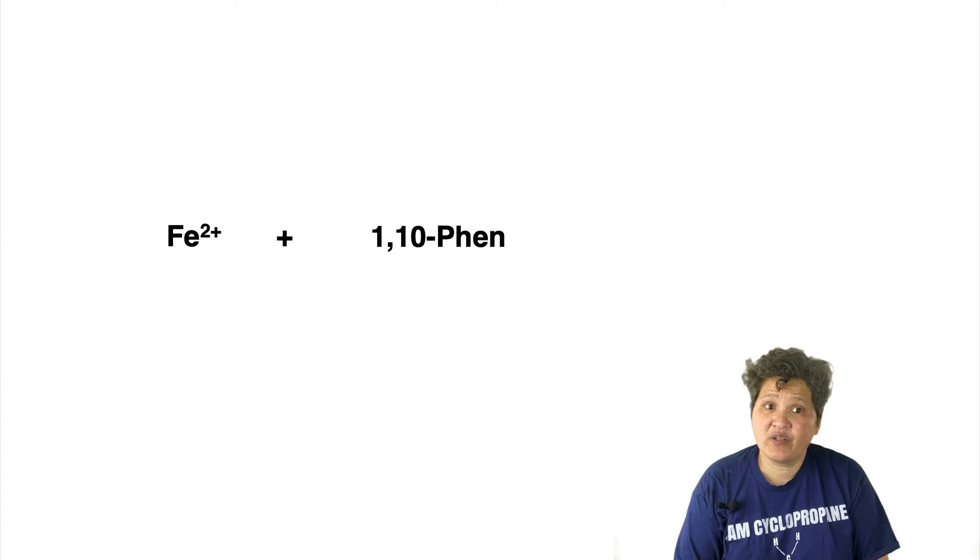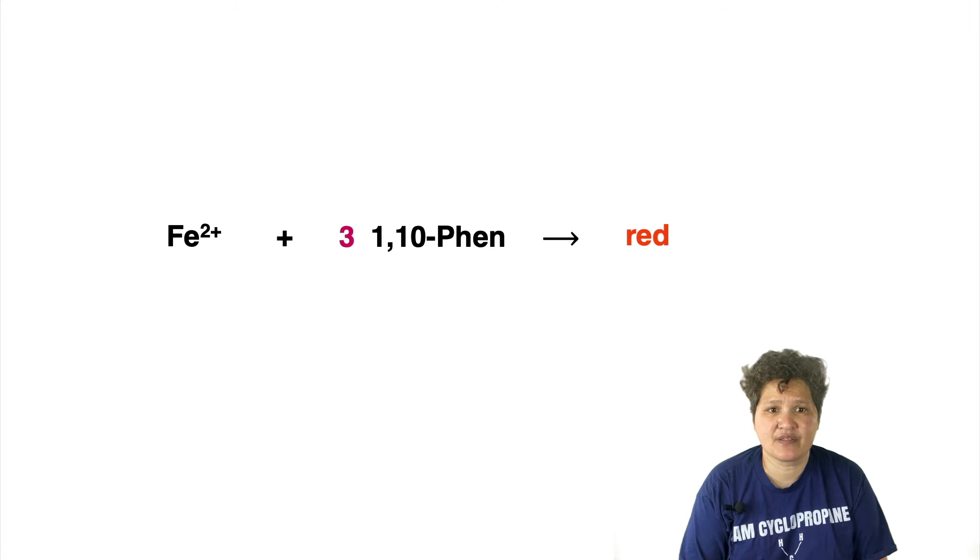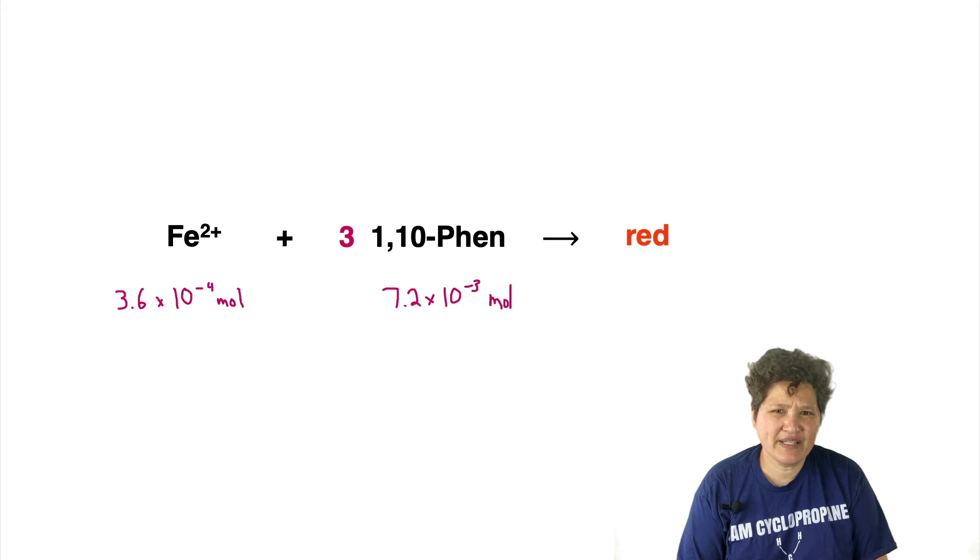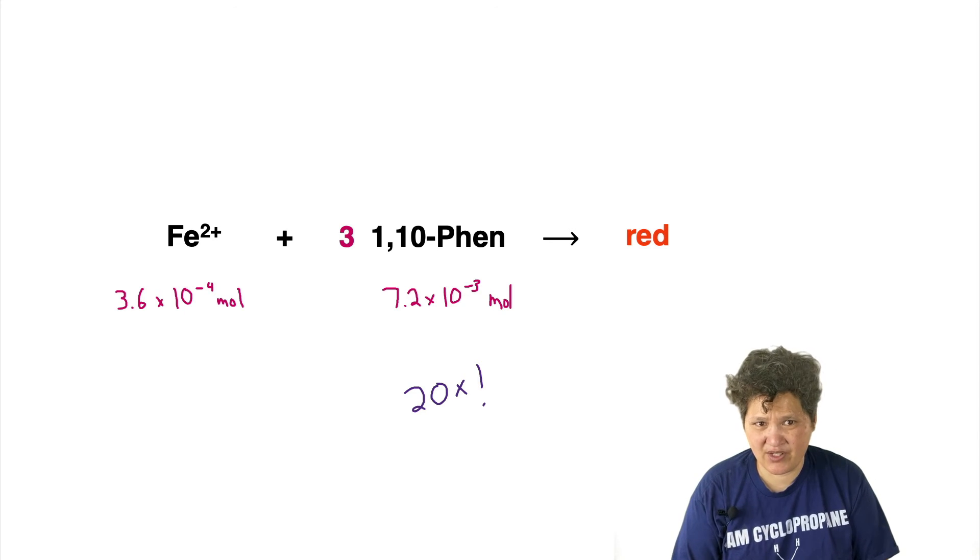Reading the background theory, we see that ferrous ammonium sulfate is a source of the iron 2+ ion for this analysis, which reacts in a 3 to 1 ratio with 1,10-phenanthroline to form the red colored complex that we would be analyzing via UV-vis. Doing some math, we see that we have 3.6×10⁻⁴ moles of iron and 7.2×10⁻³ moles of phenanthroline. We have 20 times as much phenanthroline as iron, and we only need 3 times as much.